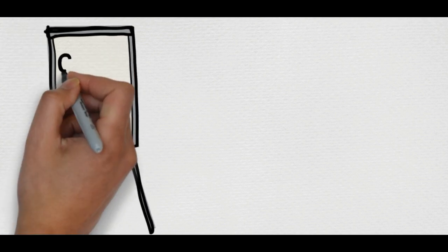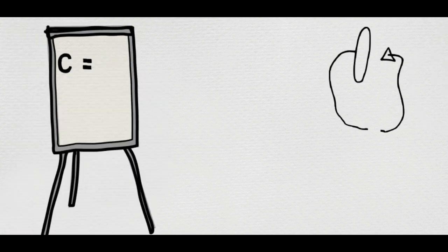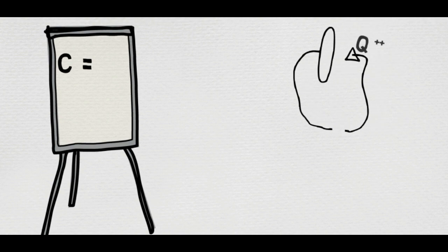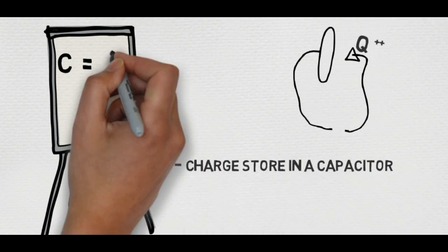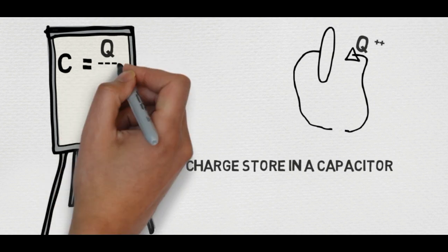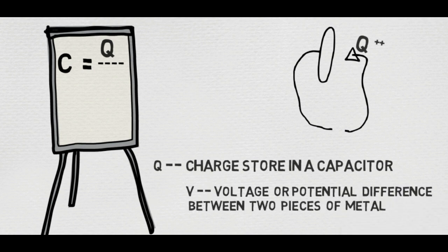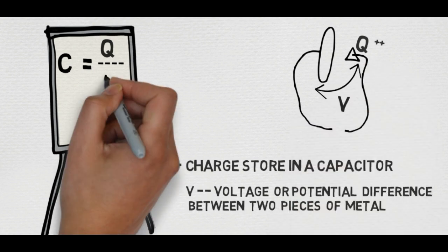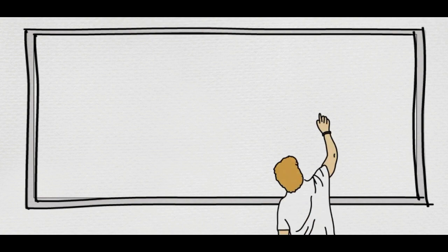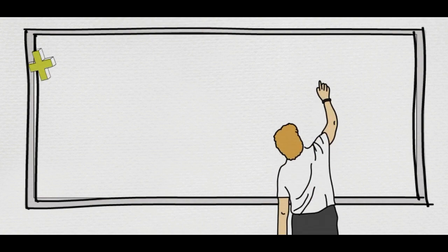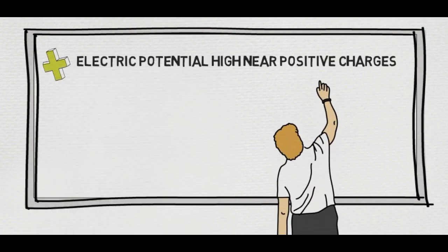So the capacitance is equal to the charge stored in a capacitor divided by the voltage across the capacitor. So the electric potential is high near the positive charges and low near the negative.